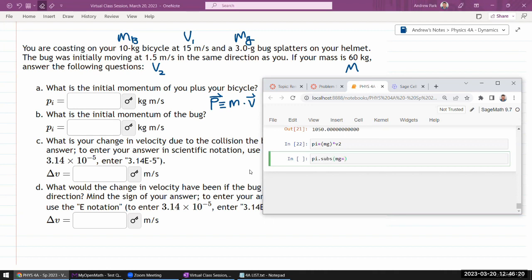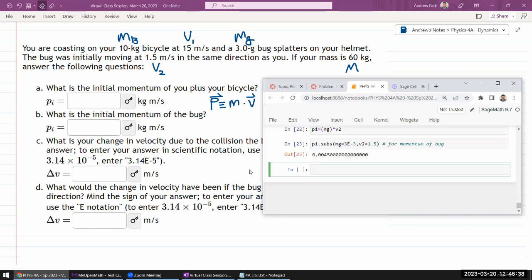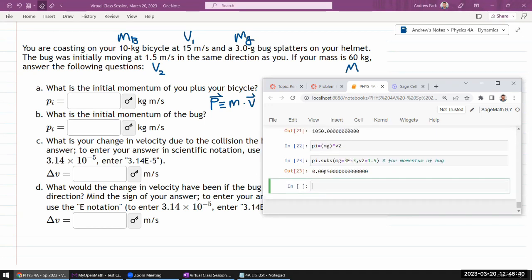And let me substitute in the values. So, the mass of the bug, it's going to be 3 grams converted into kilograms. It's going to be 3 times 10 to the power of minus 3. And then V2, it's in basic SI units, 1.5. So, and this is going to be momentum of the bug. Okay, 0.0045. Yeah, that's quite small.